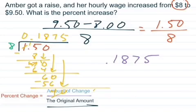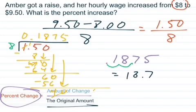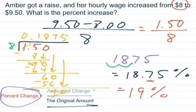Now we don't want a decimal. We want a percent change. So we need to turn this into a percent. Turning a decimal into a percent, we move the decimal point two places to the right. This actually equals 18.75%. We can actually just round this up. The 7 would make this go up to 19%. So Amber here got a 19% raise on her hourly wage.